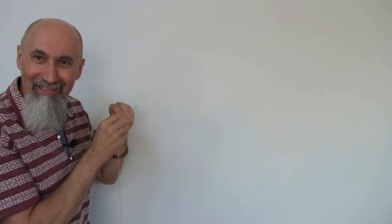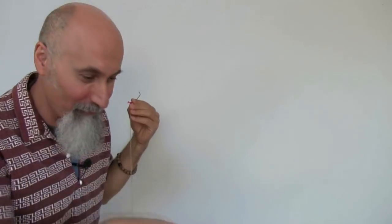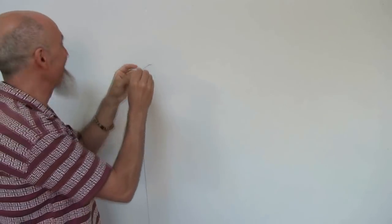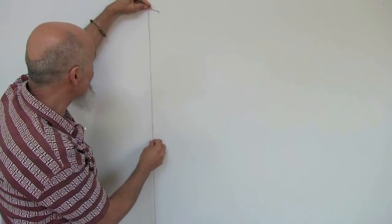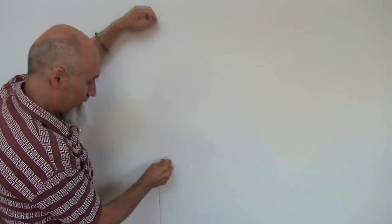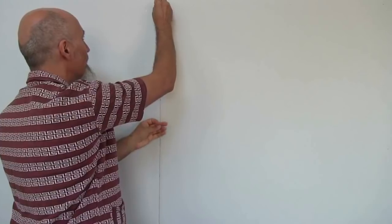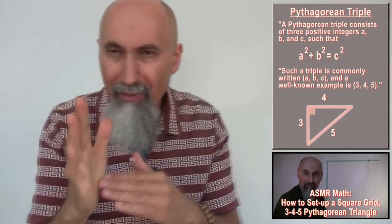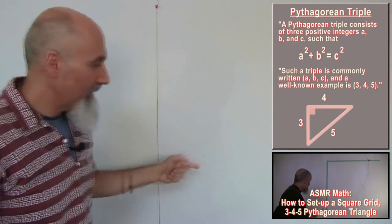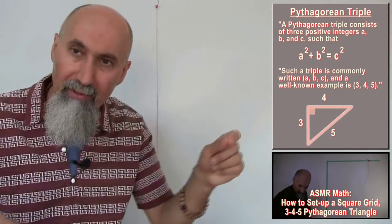We have the weight hanging down on the string, which will make sure our Y-axis is vertical. I've got little tacks here. For the Pythagorean triangles, I'm going to go down 60 centimeters one way and 80 centimeters the other way — that should be a 3-4-5 triangle. Diagonally I'll have to go one meter, and that'll guarantee we're going to have a square grid.